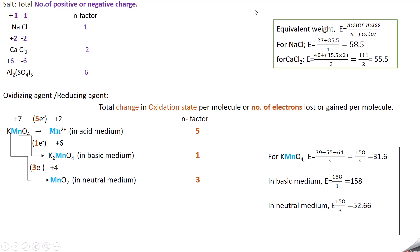For sodium chloride: 23 + 35.5 = 58.5, and N factor is 1, so equivalent weight is 58.5. For calcium chloride: 40 + 2×35.5 = 111, and N factor is 2, so equivalent weight is 111/2 = 55.5.